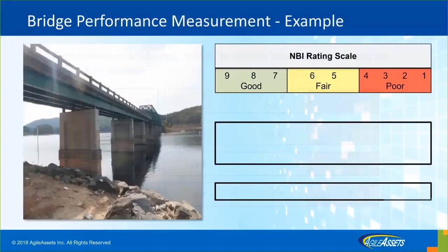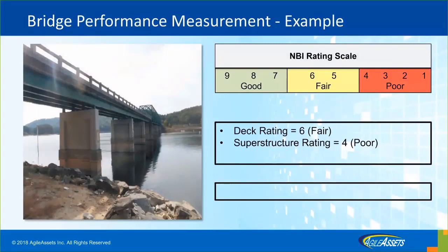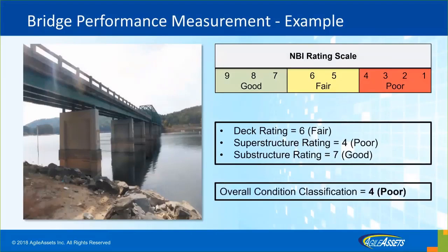If a component is rated seven or higher, it's considered good; five or six is considered fair; and one to four is considered poor. The overall bridge condition classification goes with the worst component condition. For example, if you have a bridge with a deck rating of six (fair), superstructure of four (poor), and substructure of seven (good), the overall classification for the bridge will be poor. This is the measure defined in MAP-21, and we need to use this when doing target setting and planning.